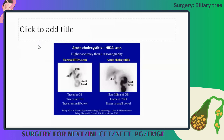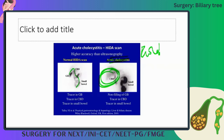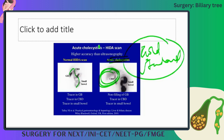The gold standard investigation for acute cholecystitis is the HIDA scan. A radioactive isotope is given and a gamma camera detects uptake. In a normal patient, the tracer goes into the gallbladder and common bile duct. In cholecystitis, the inflamed gallbladder does not take up the contrast. HIDA scan is gold standard but not routinely performed.